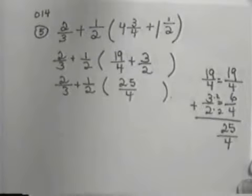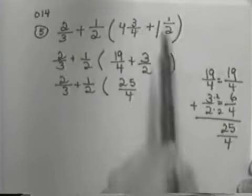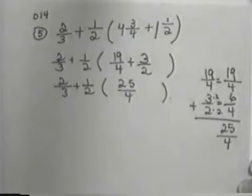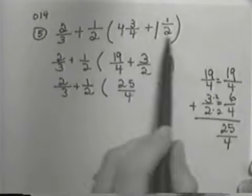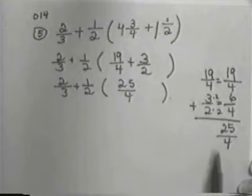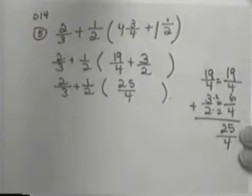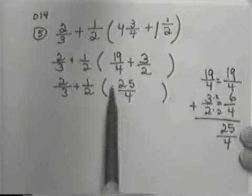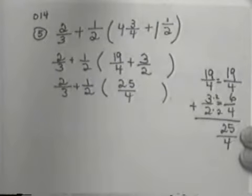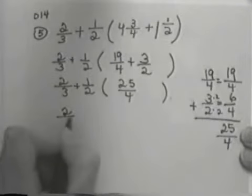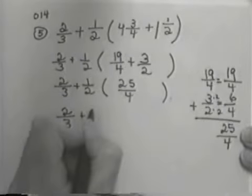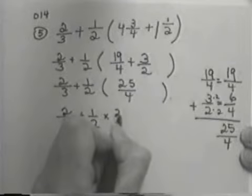Now, if you had done the problem by adding the 4 and 1 and getting the 5, and then adding the 3/4 and the 1/2, getting a common denominator and adding those, you would have ended up with a mixed number. Actually, the mixed number you would have gotten would have been 6 and 1/4. But then you'd have to turn it back into an improper fraction before you got ready to do the next step. Because in our next step, we've got to multiply.